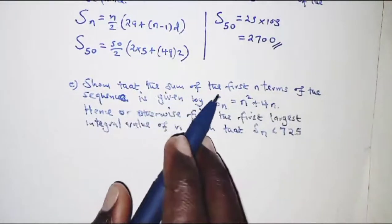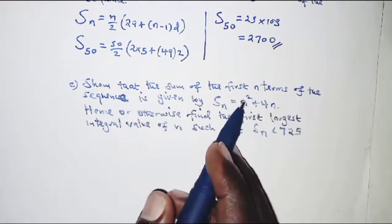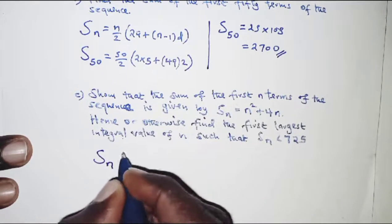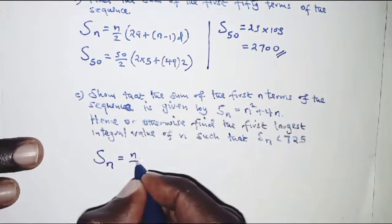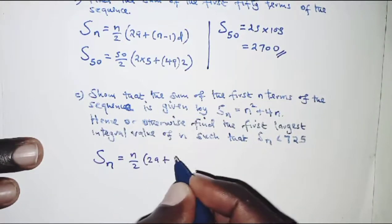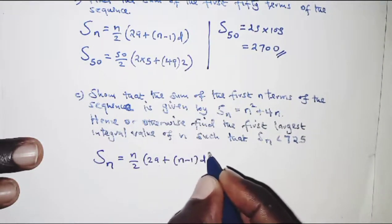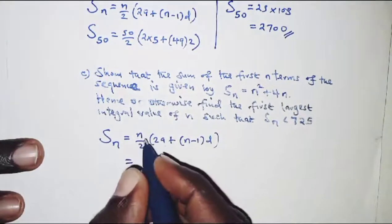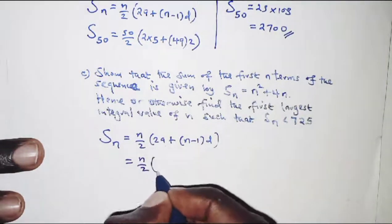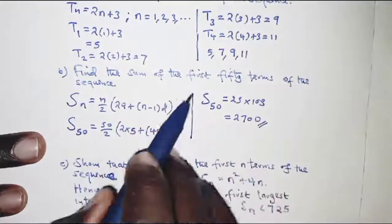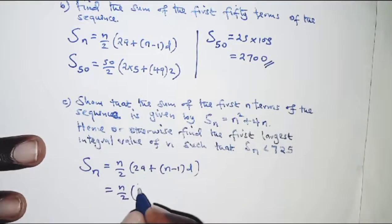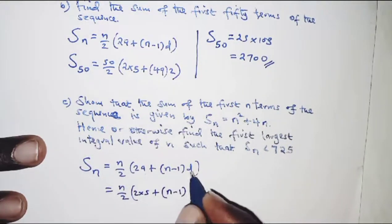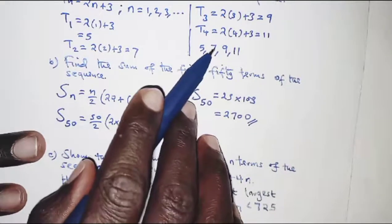For part c, we are to show that the sum of the first n terms is given by n squared plus 4n. We use the general formula S_n equals n over 2 times (2a plus (n minus 1)d). Substituting a equals 5 and d equals 2, we get n over 2 times (2 times 5 plus (n minus 1) times 2), which is n over 2 times (10 plus 2n minus 2).